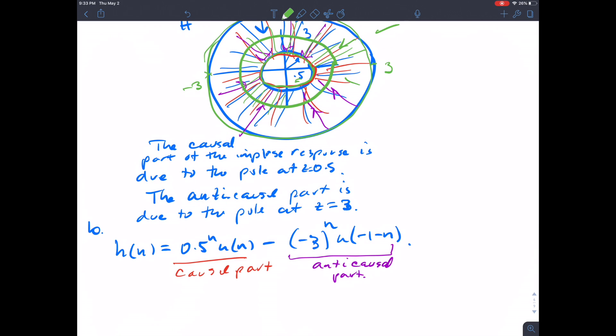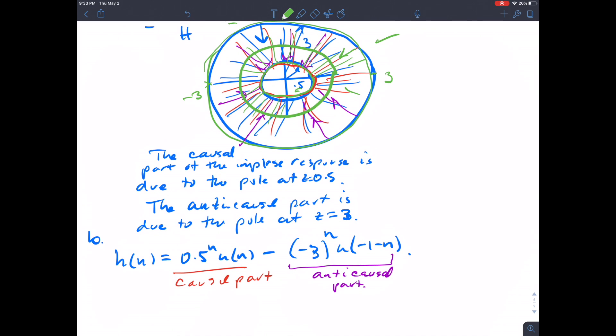And from that, we know that if it's a causal response, then the region of convergence emanates out. So that's the part that emanates out from 0.5. So the causal part is associated with the pole at 0.5, and the corresponding anti-causal part is the pole associated at minus 3.